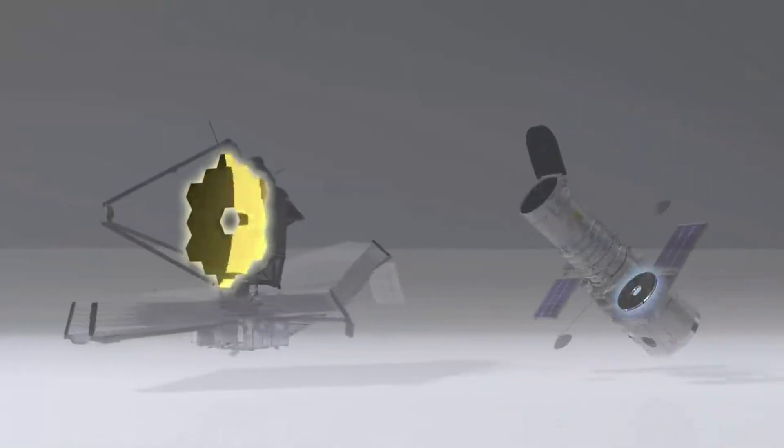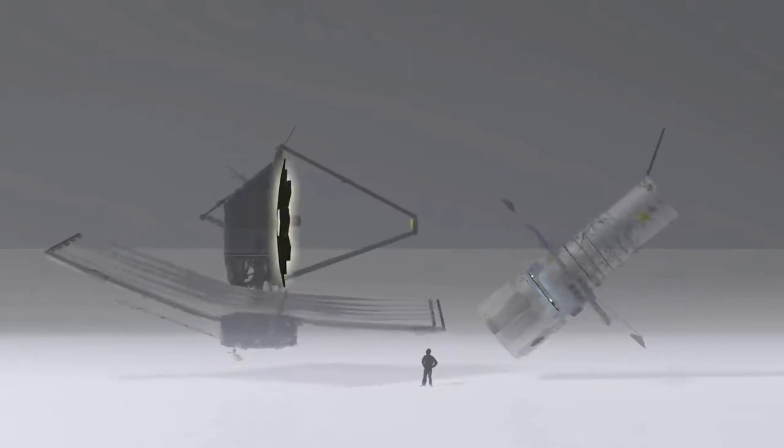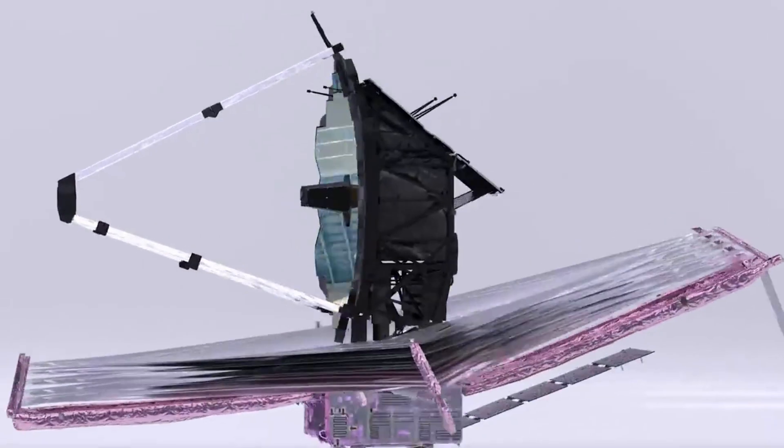It's important to point out that while careful planning for Webb's first full-color images has been underway for a long time, the new telescope is so powerful that it is difficult to predict exactly how the first images will look.